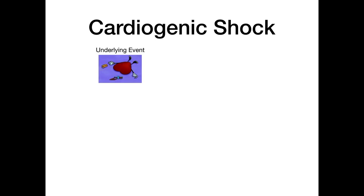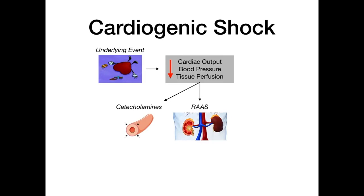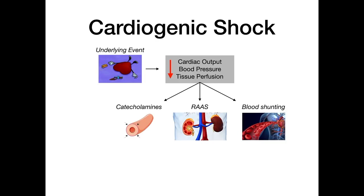In cardiogenic shock, some underlying event damages the heart, causing a decrease in cardiac output, a decrease in blood pressure, and a decrease in tissue perfusion. This triggers three compensatory responses: increased release of catecholamines causing vasoconstriction, activation of the RAAS system causing vasoconstriction and retention of sodium and free fluid, and shunting of blood to the brain and vital organs — sacrificing non-vital organs.